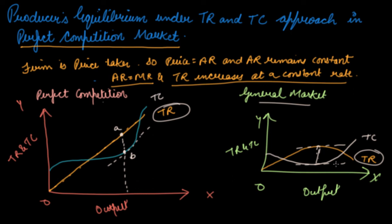So in a perfect competition market, a firm is a price taker — AR is constant, MR is constant, AR equals MR, and because of constant MR the TR also increases at a constant rate, making TR a straight line. You then draw the TC curve, draw a tangent to TC parallel to the TR line, and where they are parallel the difference between TR and TC is maximum — that is the point of maximum profit and producer equilibrium at quantity Q1.